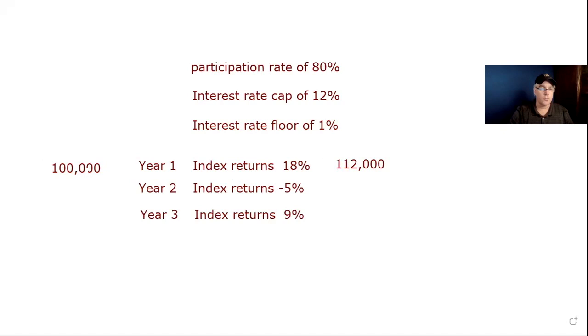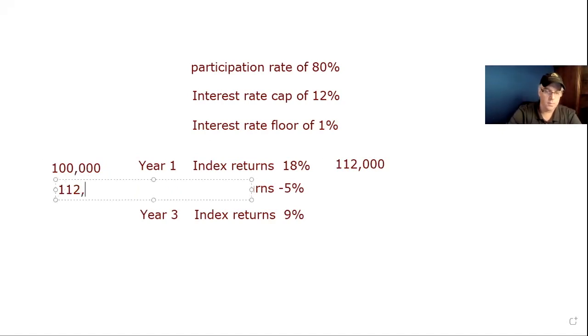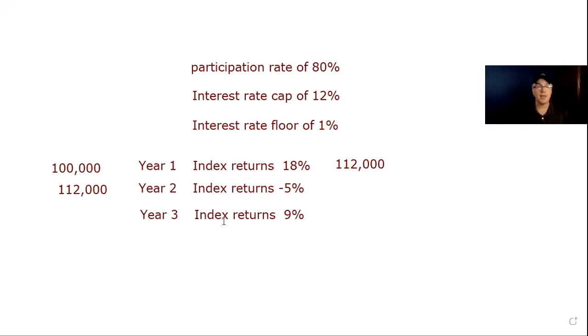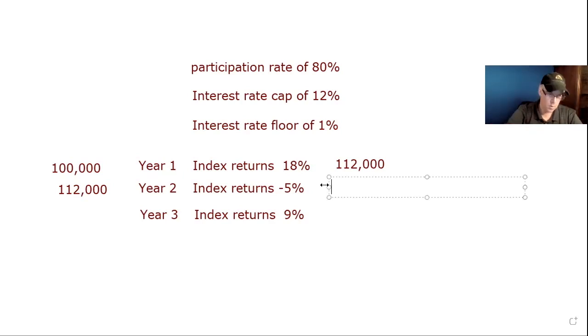Now it resets to start at 112,000. That's our next year. Now the index went down 5%, which sucks, but remember we have a floor, we can't earn less than 1%. So we're going to earn 1% on our money. Better than losing money, it's not a great return but it's better than losing. So we're going to do 112,000 times 1.01, which gives us 113,120. That's at the end of the second year.